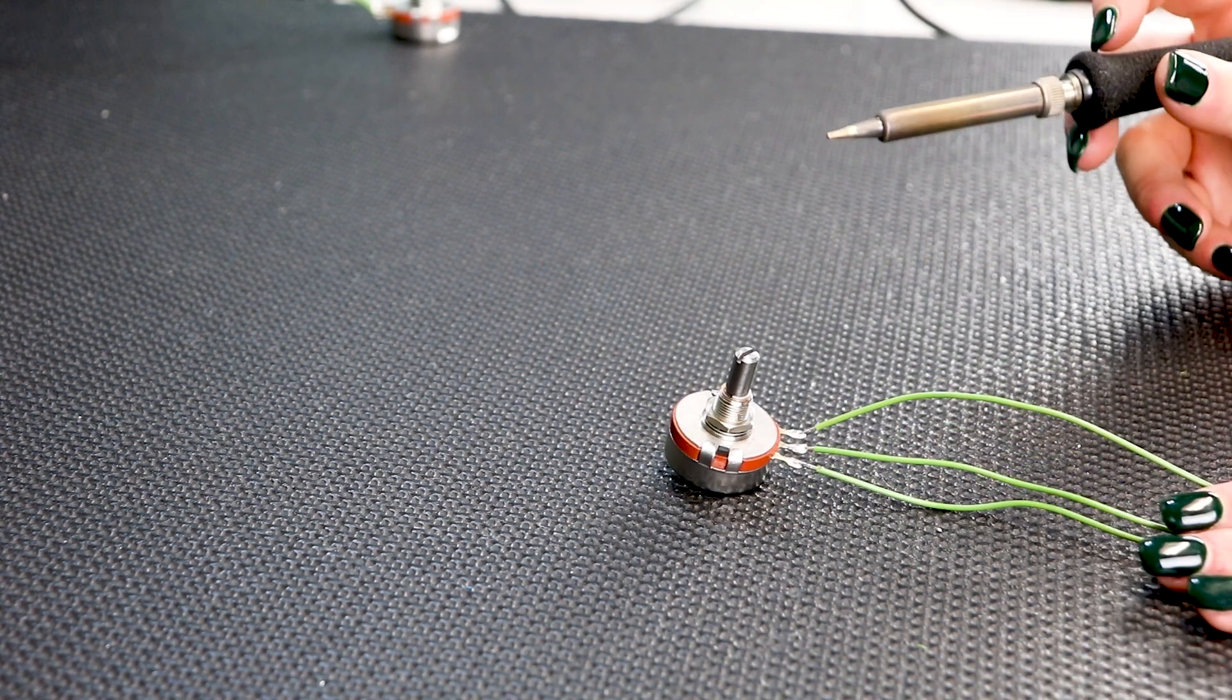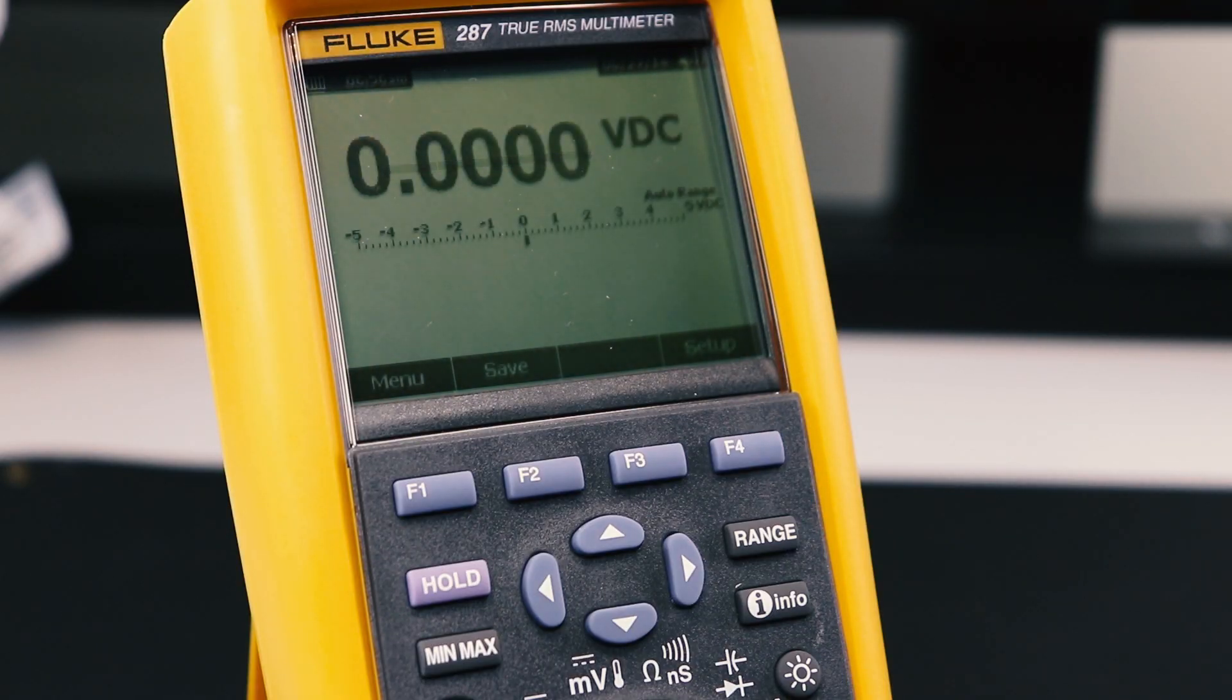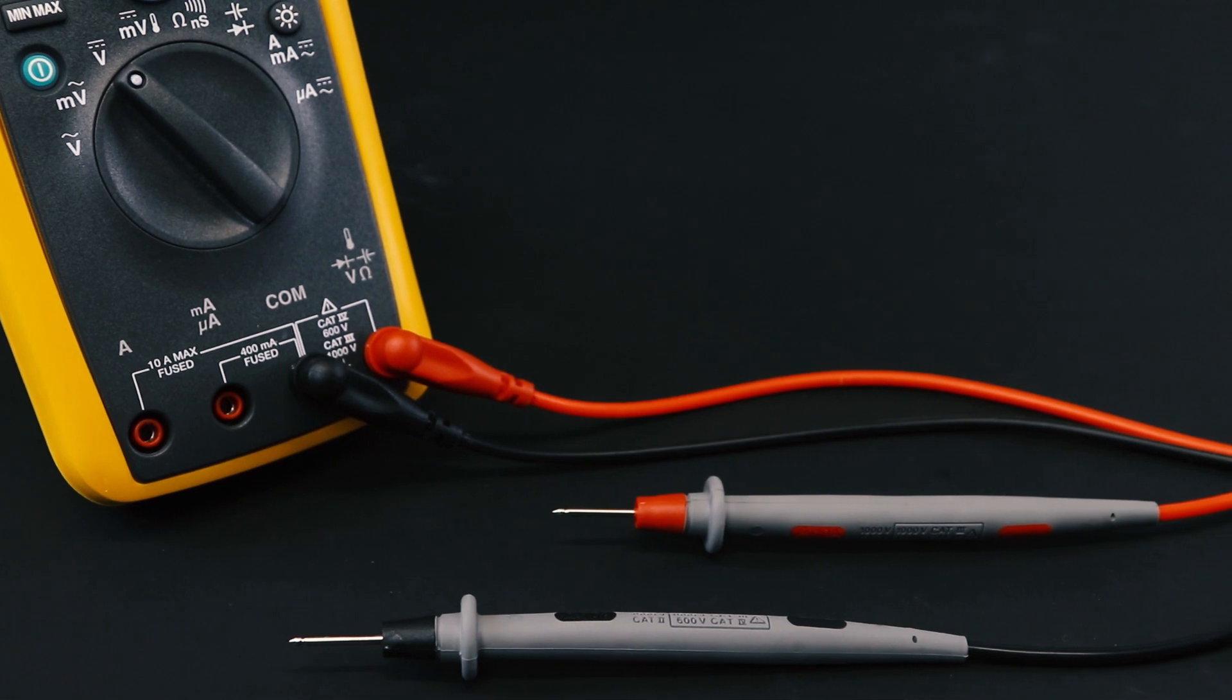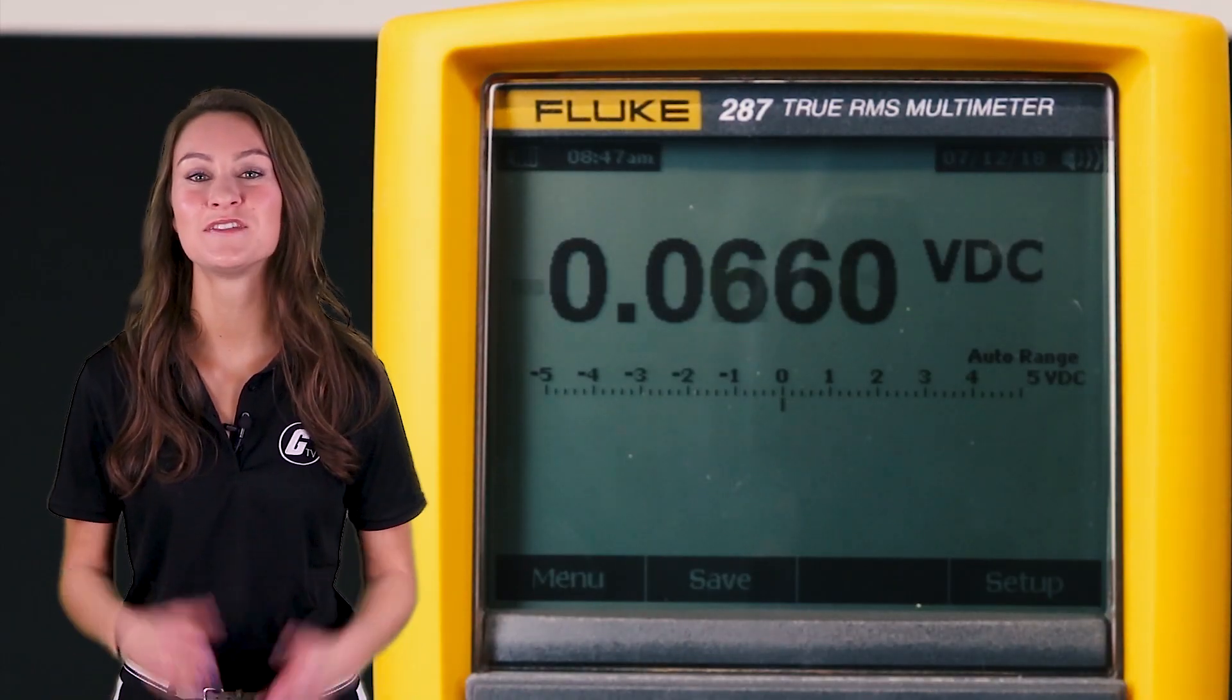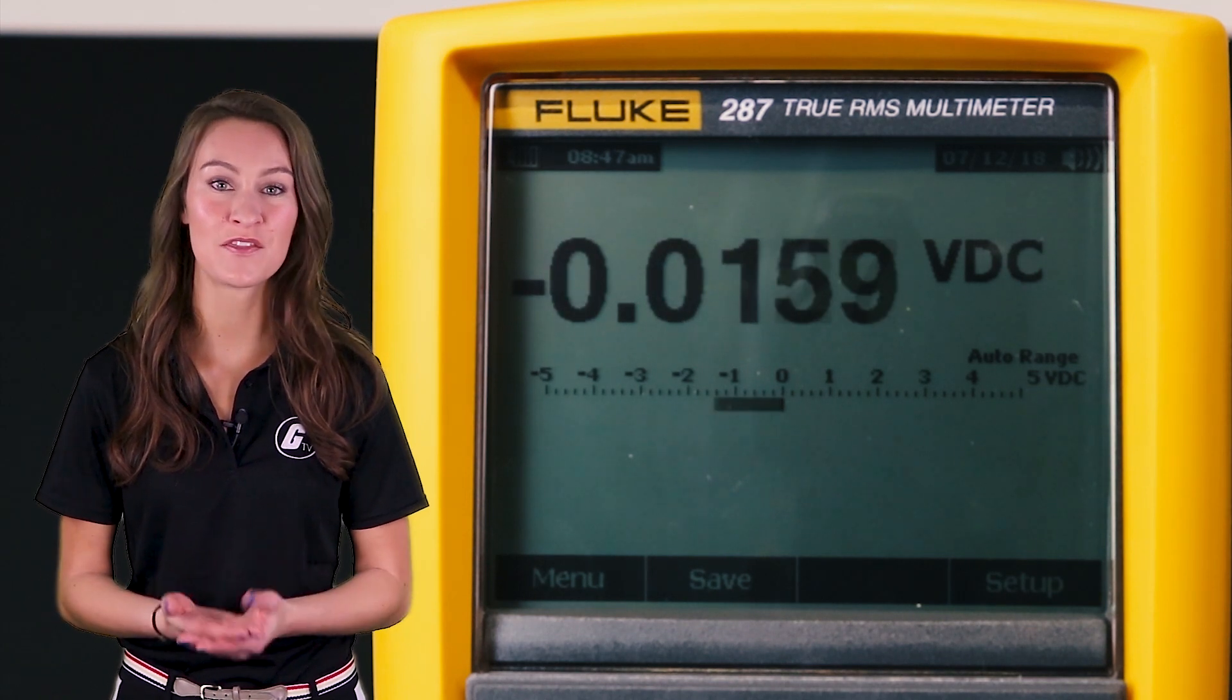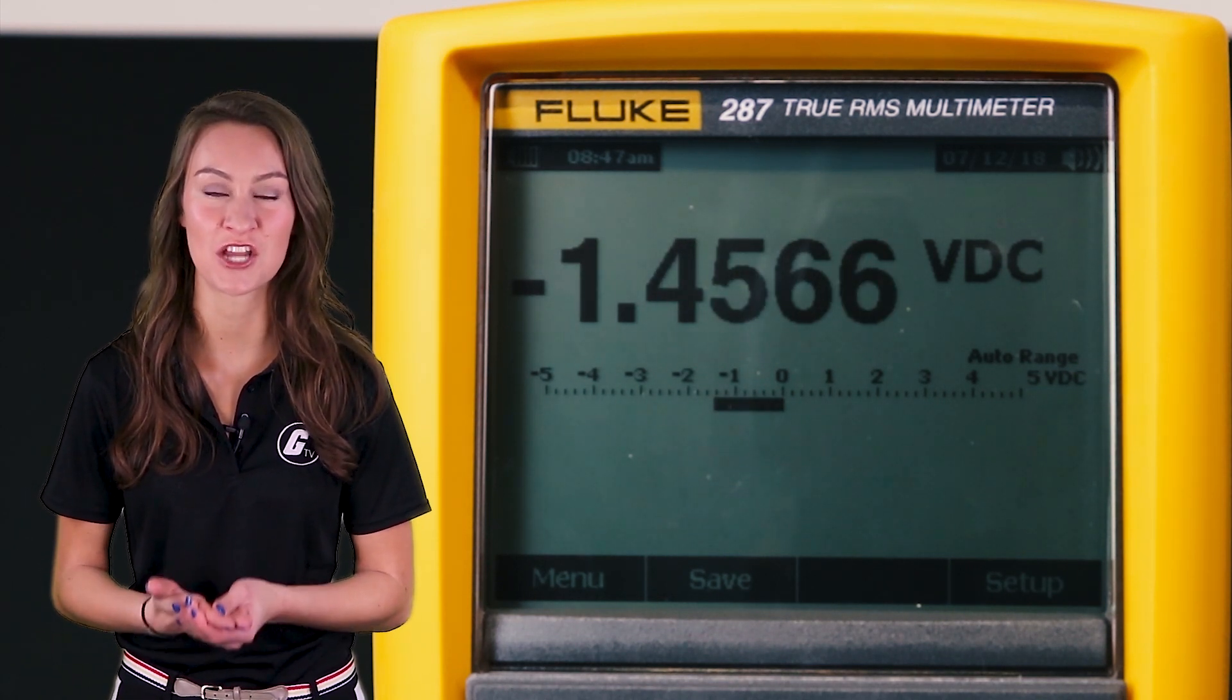Once you have wired the pot, you can test it using a voltmeter. Connect the voltmeter's leads to the input and output terminals of the pot and turn the shaft. If done correctly, the reading on the voltmeter should change as the shaft is turned.